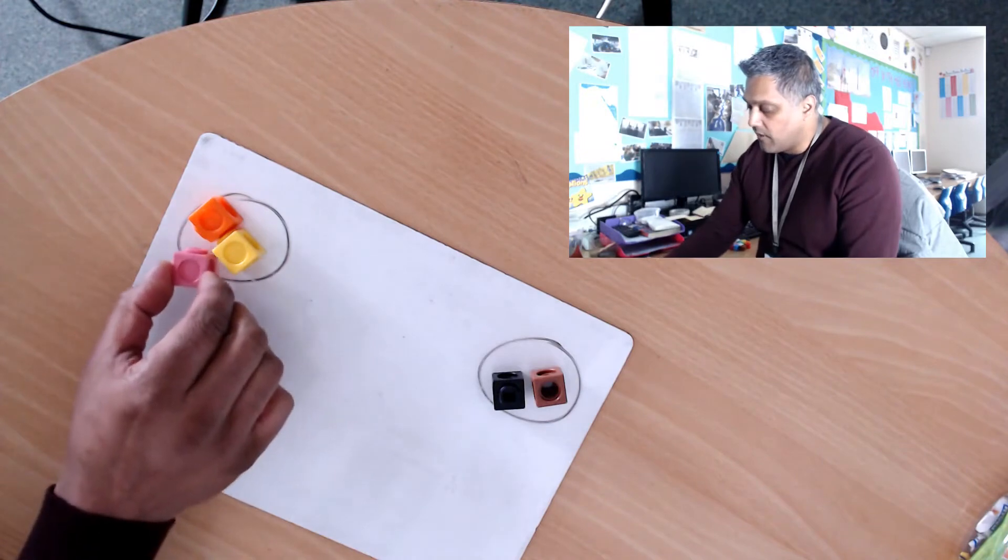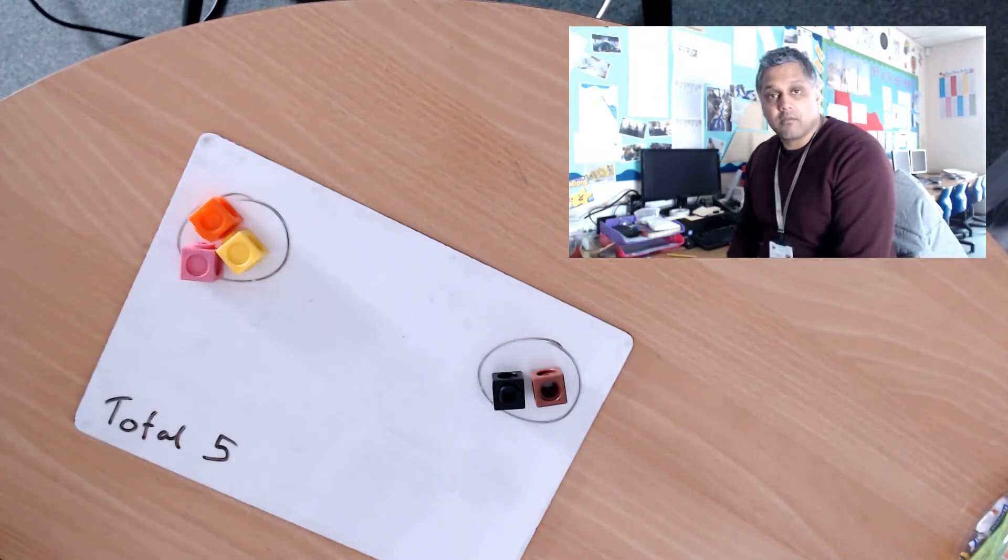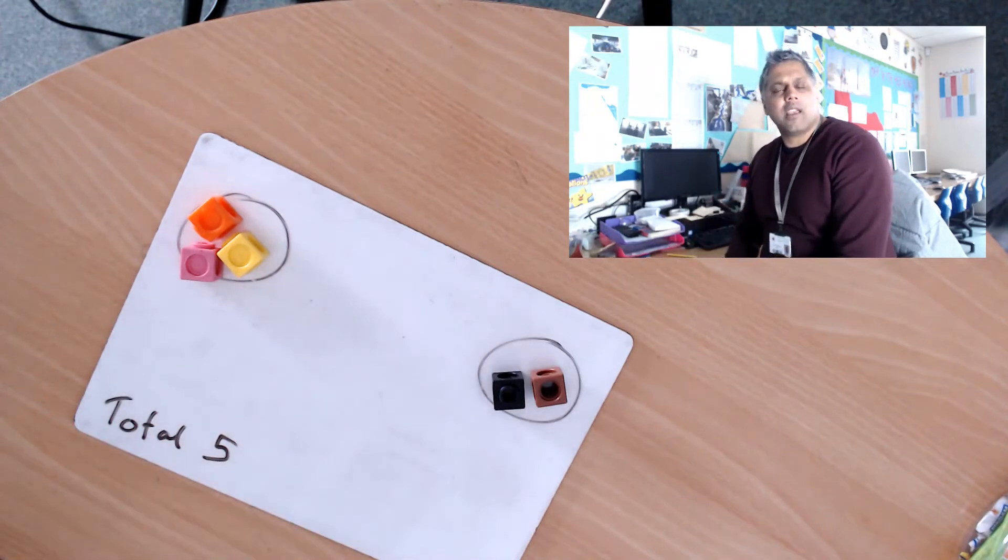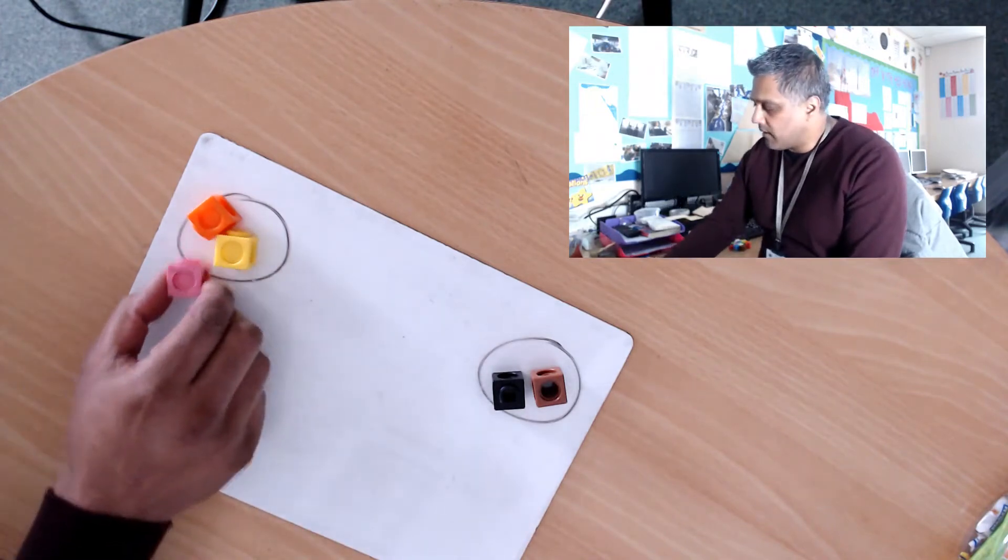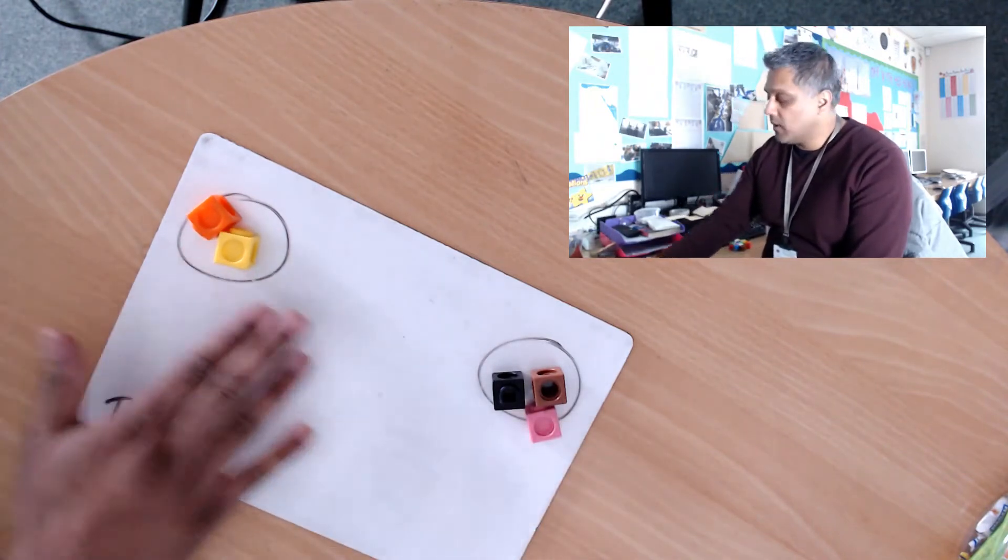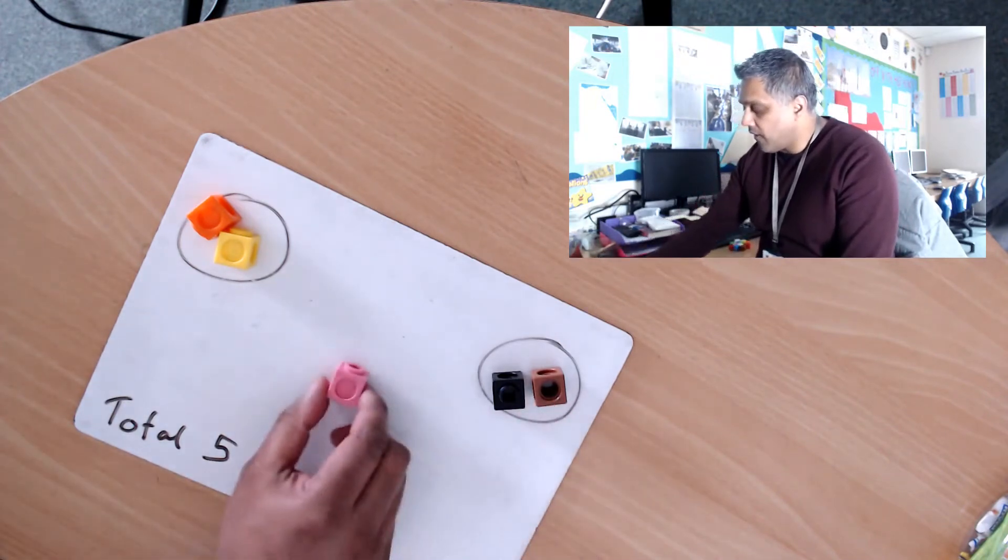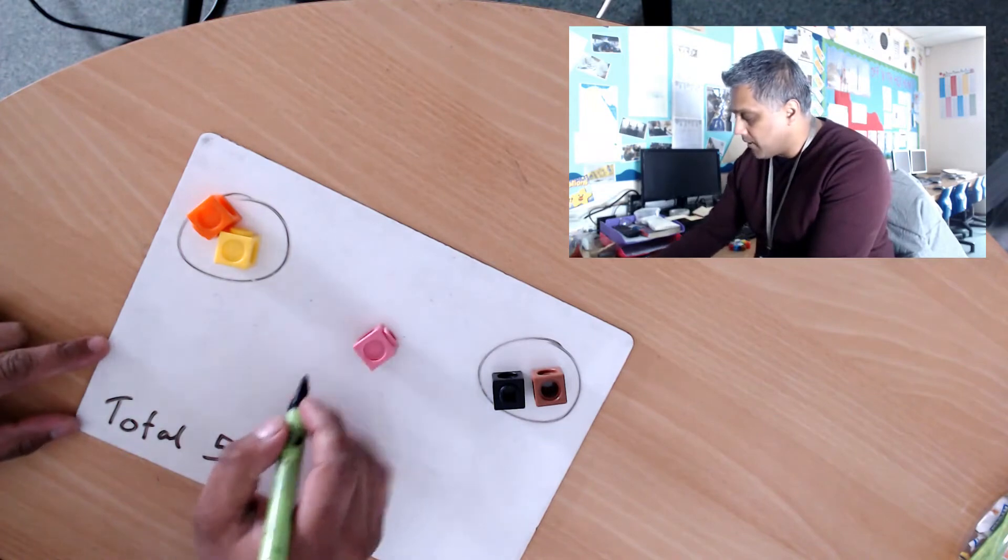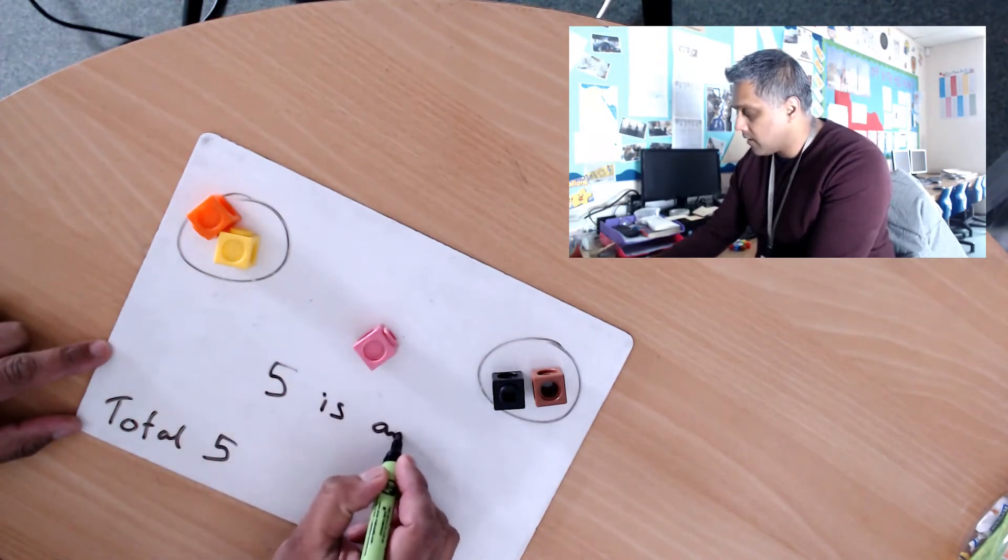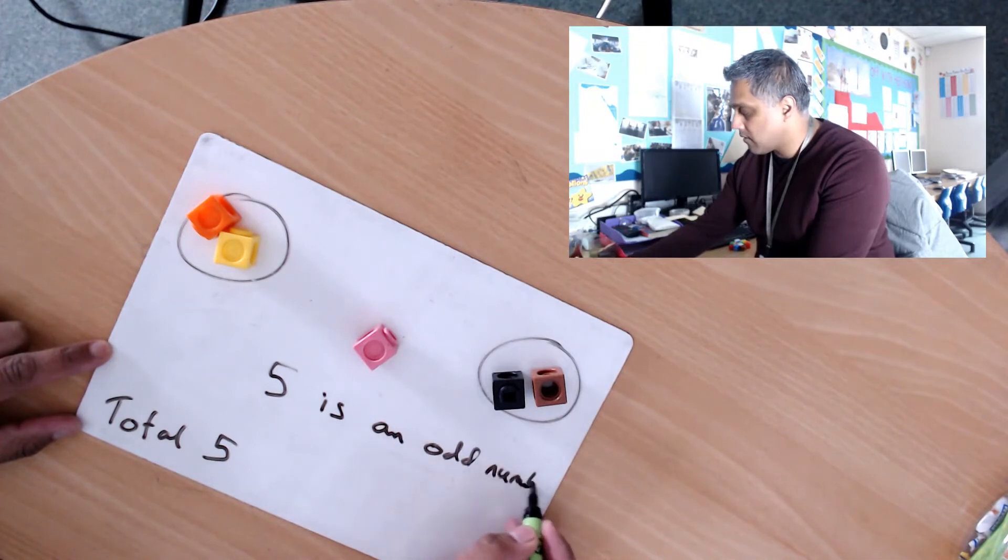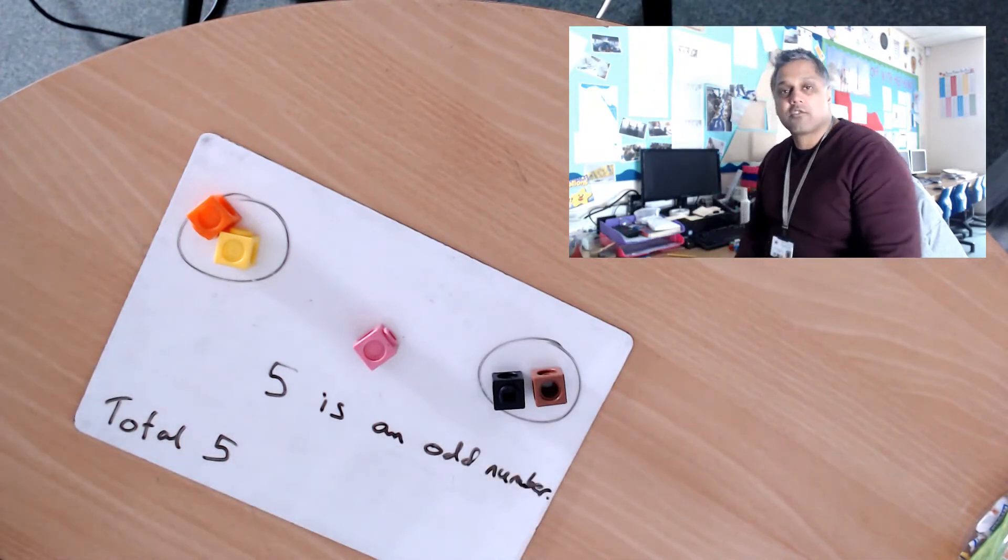So my total I had was five, and because I can't share equally—if I give that person or that group one, I have three and they have two. Is that equal? No, it's not. If I give it to that group there, I have two and they have three. Is that equal? No, it isn't. And so five is an odd number.